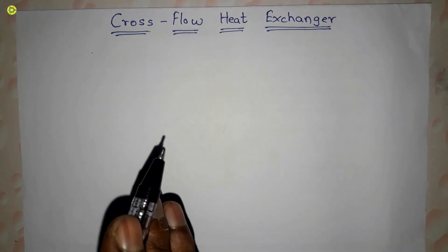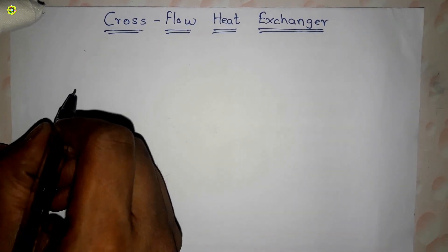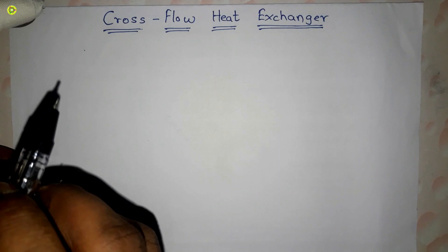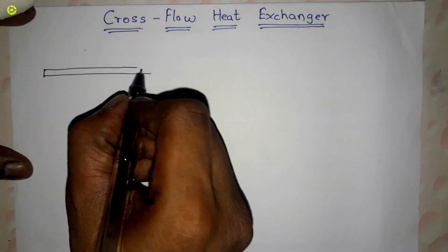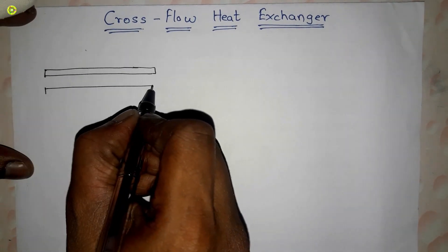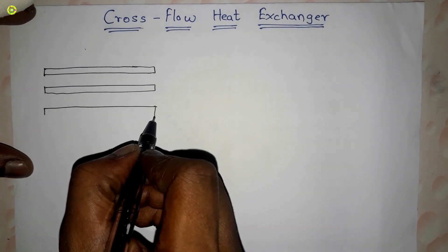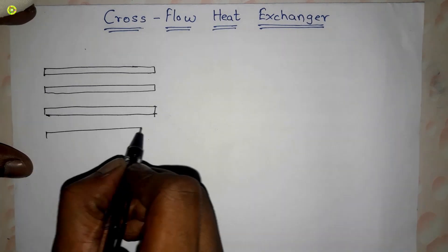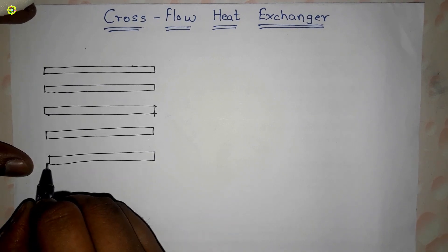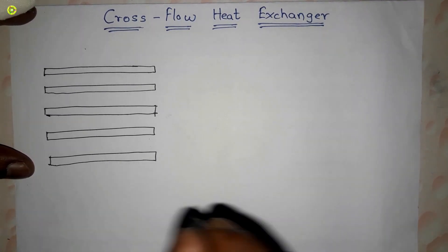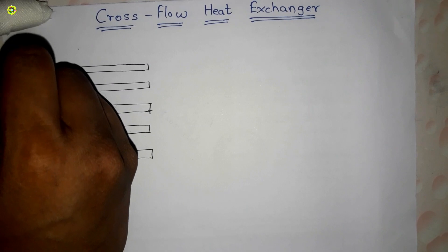For the cross flow heat exchanger with mixed cold fluid stream, I am drawing the tubes here. This is the first tube, second tube, third tube, fourth tube, fifth tube, and so on. These are our tubes.